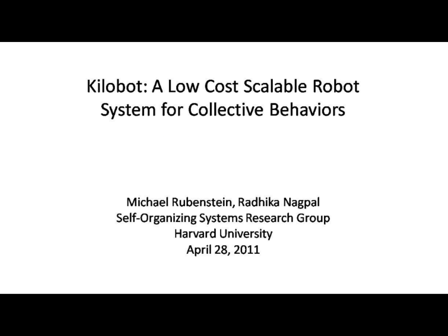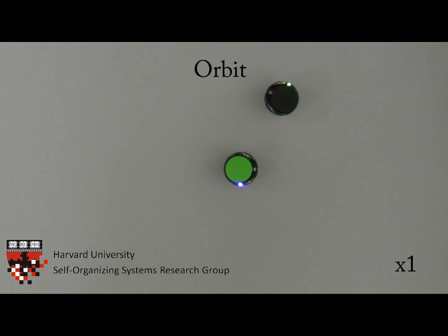This video contains some simple behaviors for a small group of kilobot robots. In this first demonstration, a kilobot is programmed to orbit another stationary robot.